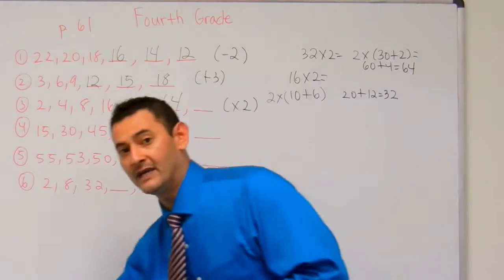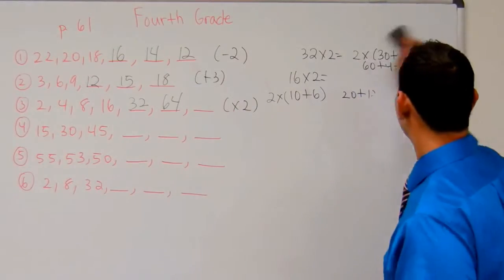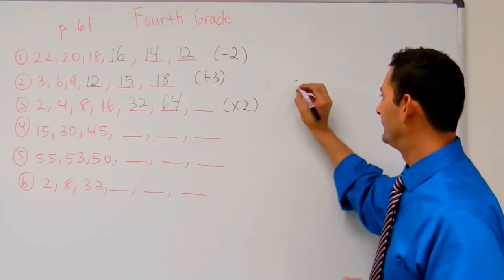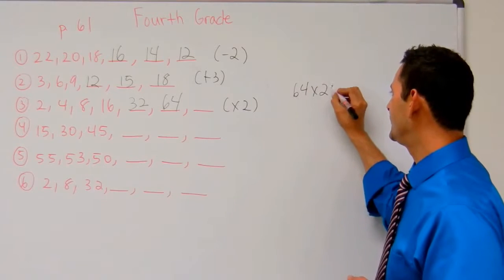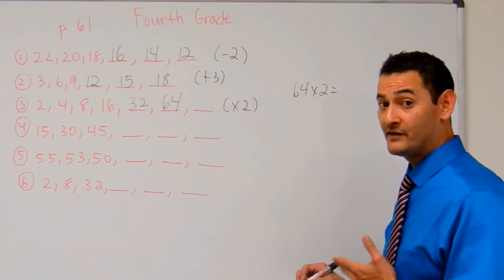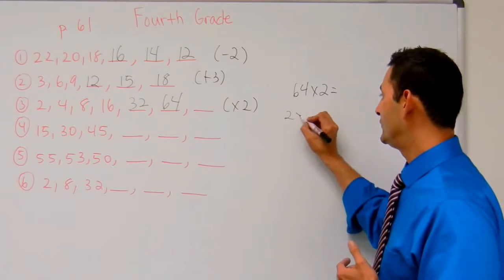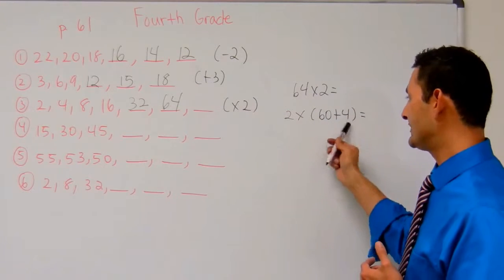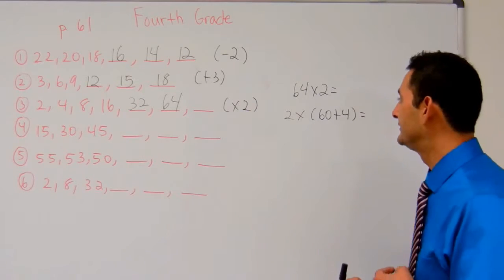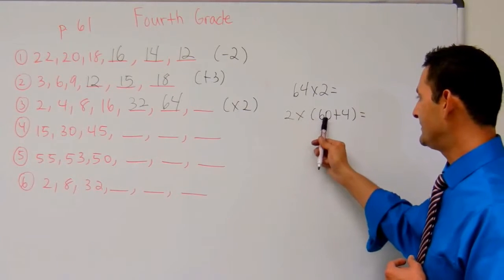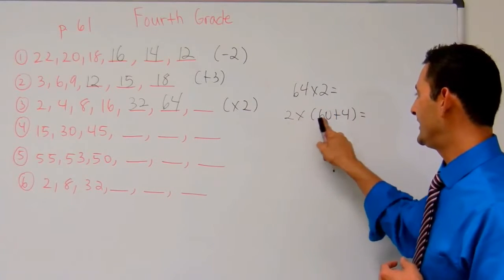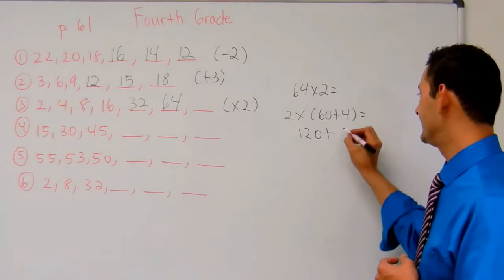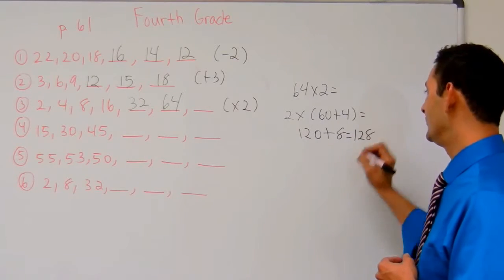I'm going to erase it a little bit so we have space. Now let's take a look at 64 times 2. I've got 64 times 2 equals, I'm going to use the distributive property again. 2 times 60 plus 4 equals. 2 times 60, place value, 2 times 6 is 12, add the 0, plus 2 times 4 is 8, that's going to equal 128.